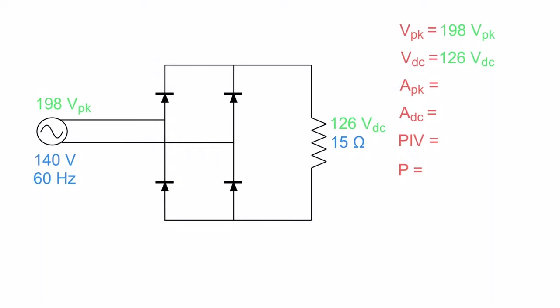Next, we have our current peak. Well, we can take our peak voltage and divide it by our ohmic value of the load to get our peak current, which is 13.2 amps peak. So let's put that over here where it belongs.